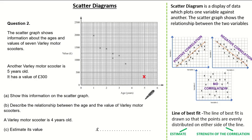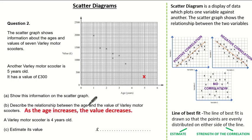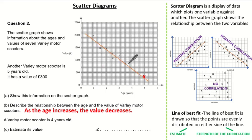We're asked to describe the relationship between the age and the value of Varley motor scooters — not the correlation. So the relationship is: as the age increases, the value decreases. Now the last part states that a scooter is 4 years old and we're asked to estimate its value. Because we're estimating, we must use our line of best fit. Remember to do it by eye and it doesn't have to be perfect. Following our trend, you can see this would be an example of a line of best fit.